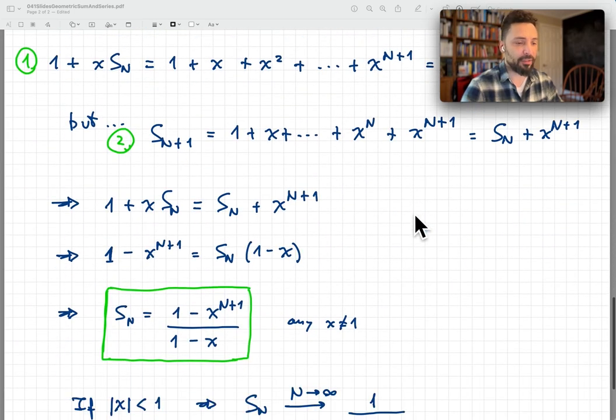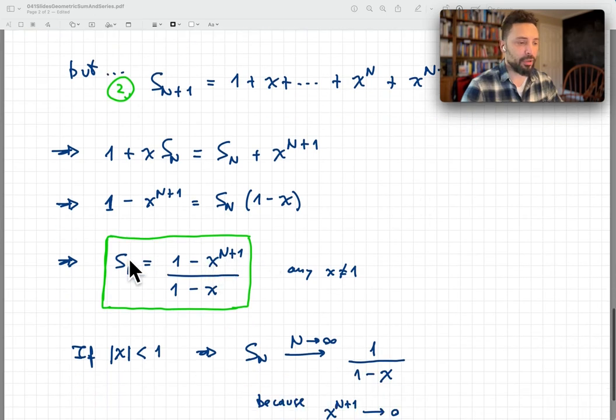But if x is different from 1, then we know that by solving this equation, putting 1 minus x on the other side of the equation, we get that S_n is 1 minus x to the power n plus 1, the whole thing divided by 1 minus x.